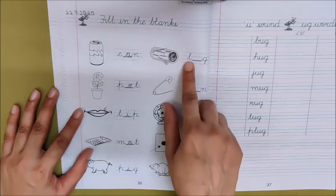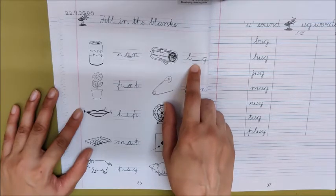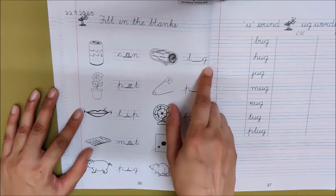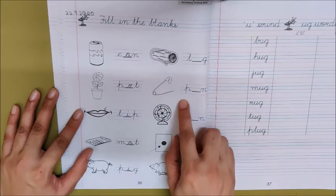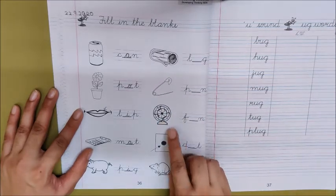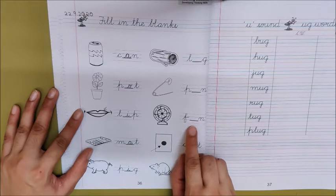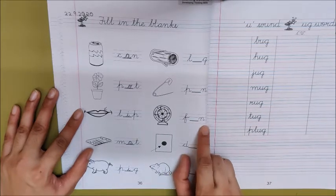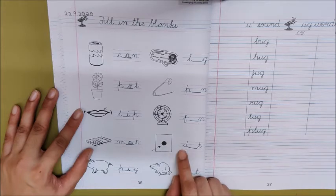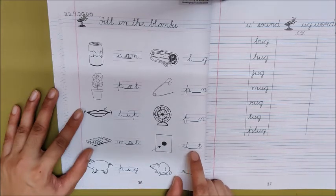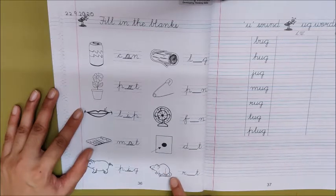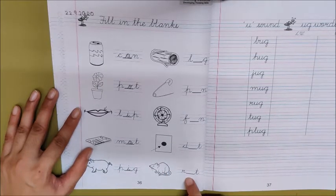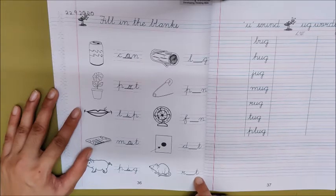Now, children, you will write the missing sound yourself here. You will find the missing sound in your words. Log. Log. What will come here? Log. L-o-g log. Pin. Fan. F-a-n fan. Dot. D-o-t dot. Rat. R-a-t rat.